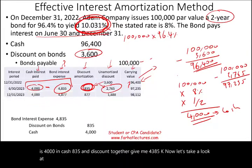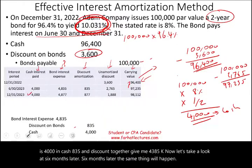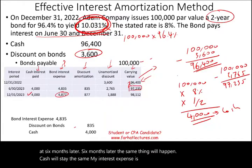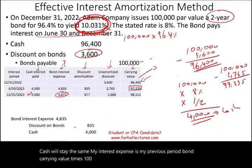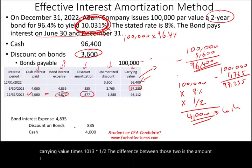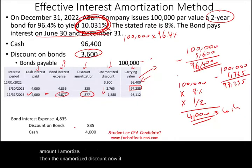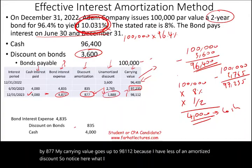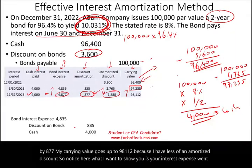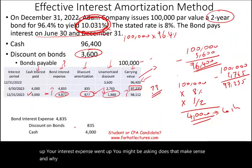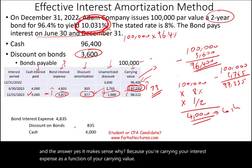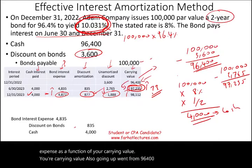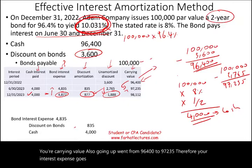Six months later, the same process repeats. Cash stays the same at $4,000. Bond interest expense is computed using the previous period's carrying value of $97,235 times 10.031% times one-half. The difference between those two is the amount amortized — $877. The unamortized discount goes down to $1,887, and the carrying value goes up to $98,112. Notice your interest expense went up — that's because interest expense is a function of the carrying value, which is also going up.